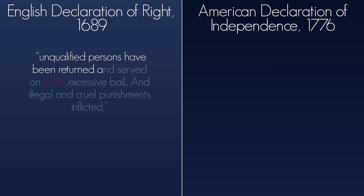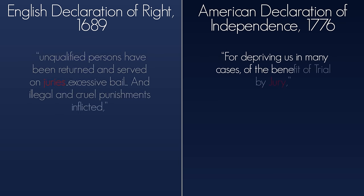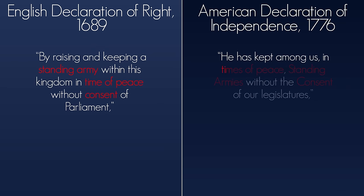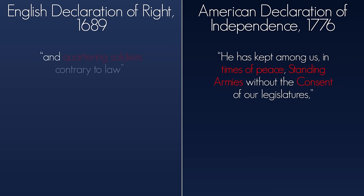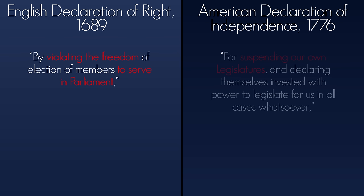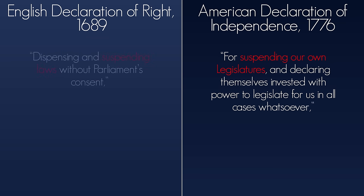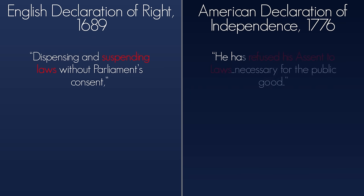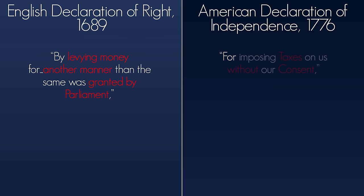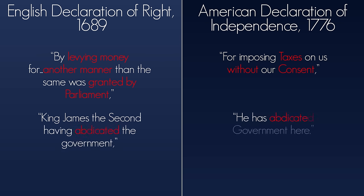Unqualified persons have been returned and served on juries; excessive bail and illegal and cruel punishments inflicted — for depriving us, in many cases, of the benefit of trial by jury. By raising and keeping a standing army within this kingdom in time of peace without consent of parliament. / He has kept among us, in times of peace, standing armies without the consent of our legislatures. And quartering soldiers contrary to law. / Quartering large bodies of armed troops among us. By violating the freedom of elections of members that serve in parliament. / For suspending our own legislatures and declaring themselves invested with power to legislate for us in all cases whatsoever. Dispensing and suspending laws without parliament's consent. / He has refused his assent to laws necessary for the public good. By levying money for another manner than the same was granted by parliament. / For imposing taxes on us without our consent. King James II having abdicated the government. / He has abdicated the government here.